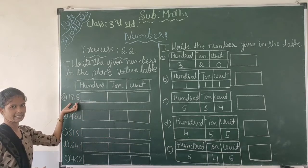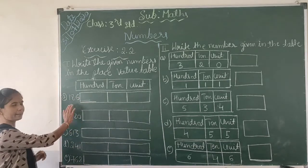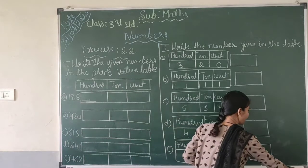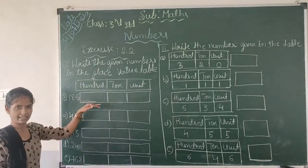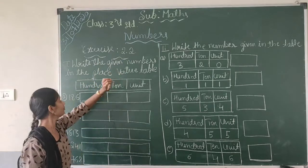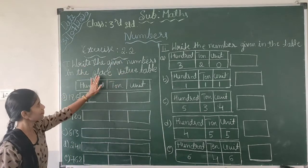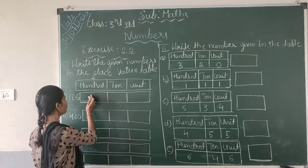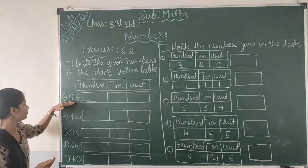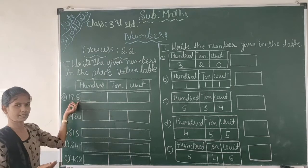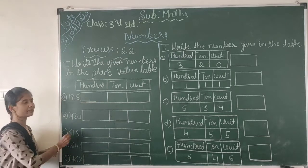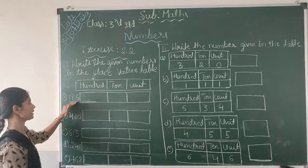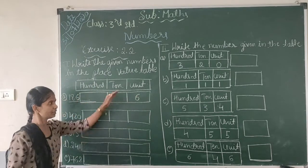We have the number 186. In this number we have different places: the units place, tens place, and hundreds place. Now we will discuss Exercise 4.2: write the given numbers in the place value table. Here the number 186 is given. In this number, 6 is in which place? Yes, 6 is in the units place.